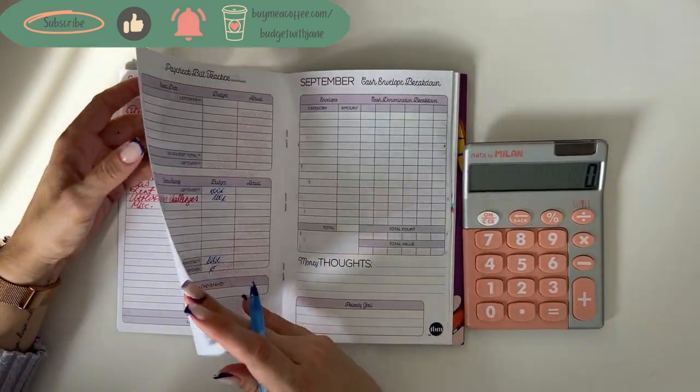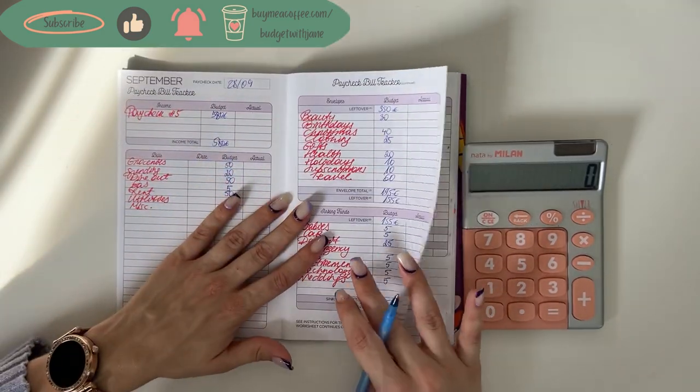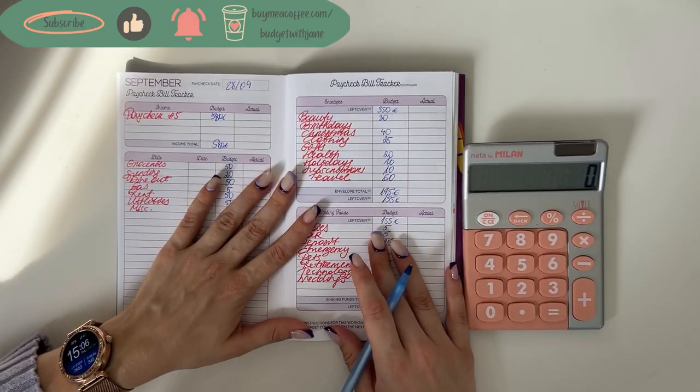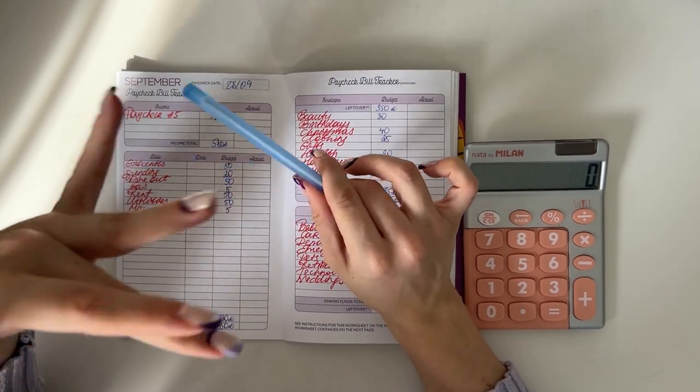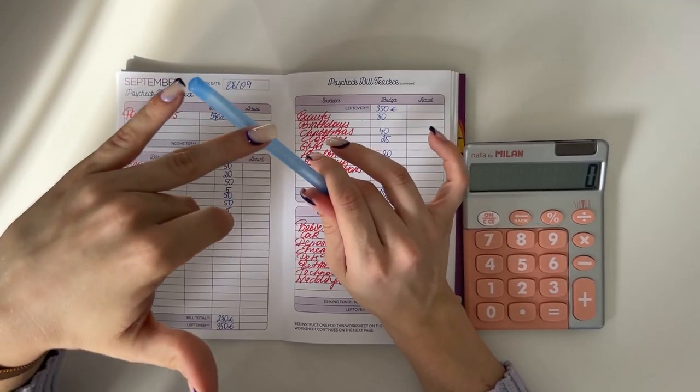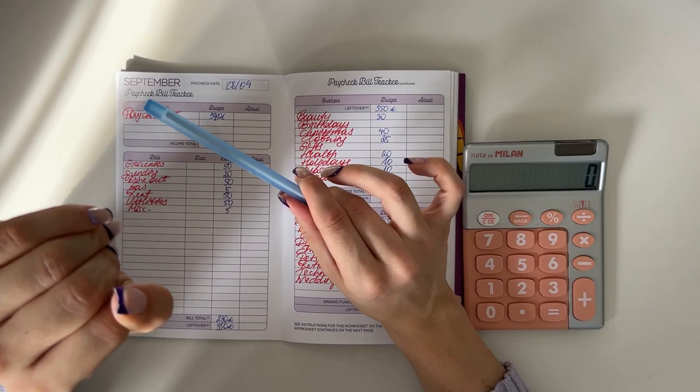And we're gonna put that $100 into our savings challenges, which means we have zero euros left to budget. And that means that the last paycheck of September is budgeted. So what I'm gonna do is tomorrow I'm gonna be back with a cash stuffing of this paycheck, and then we have a cash condensing video coming up.